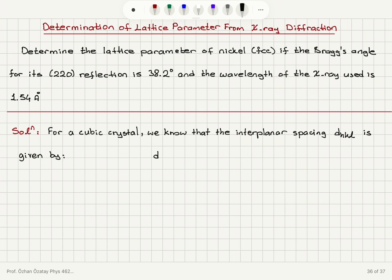This is given by D sub HKL equals A divided by H-square plus K-square plus L-square square root. This we have shown in the lecture, and also as a problem we have proven this result.